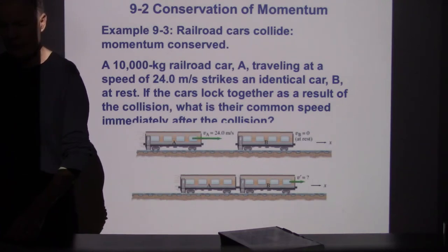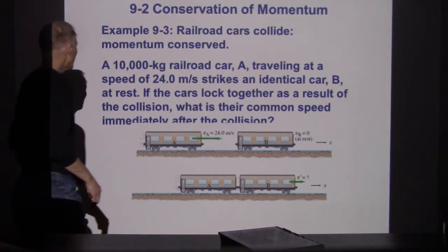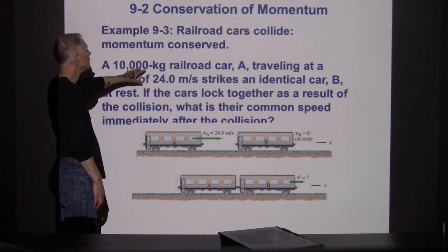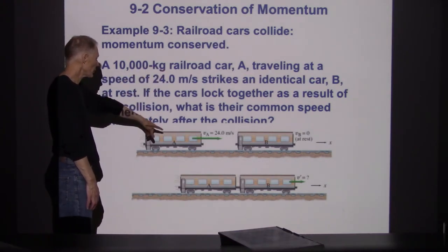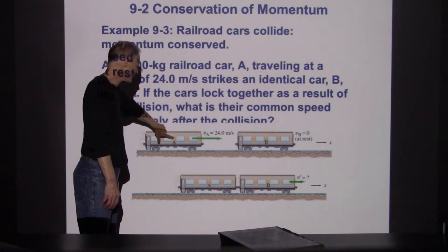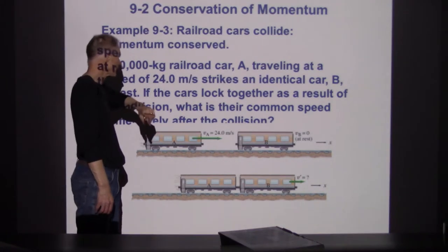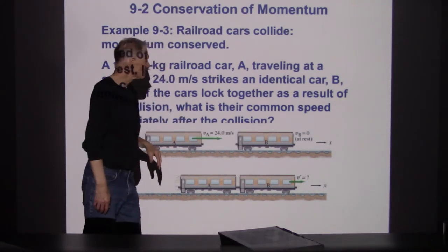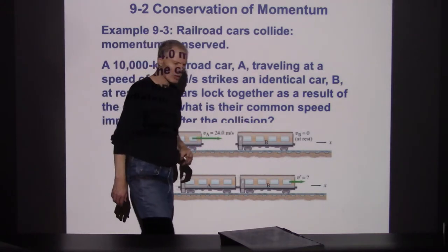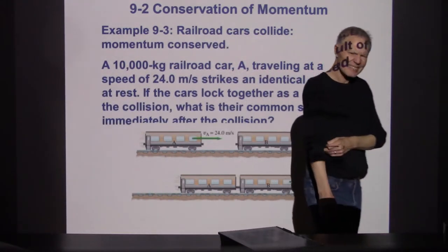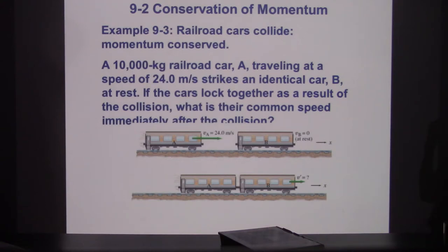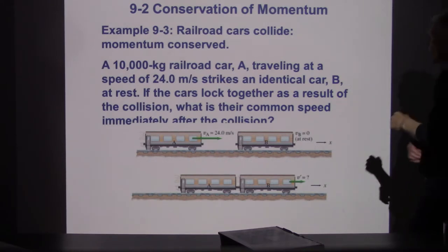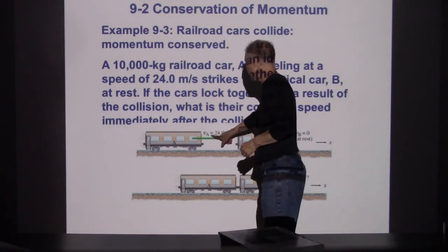Here's an easier example: a 10,000 kilogram railroad car coming in at 24 meters per second — that's like 55 miles an hour — running into another railroad car at rest. These numbers seem a little extreme; there's going to be a lot of damage to those train cars. Anyway, that's the example: 24 meters per second coming in, the other one at rest.